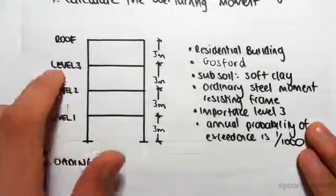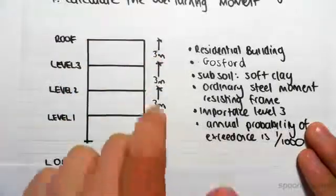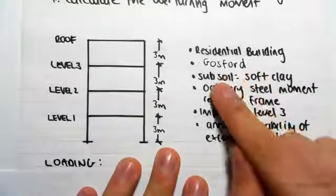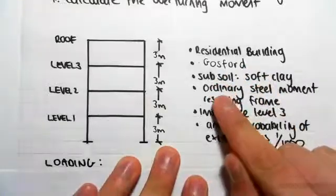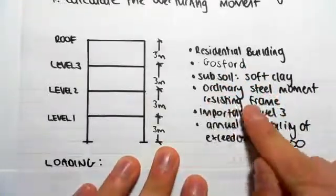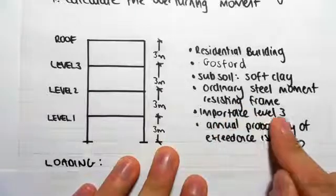Okay, so here's our structure. It is one, two, three, and there's a roof, three meters high each level. We're told that it's a residential building in Gosford, the subsoil is soft clay, it's an ordinary steel moment resisting frame, the importance level is three, and the annual probability of exceedance is one in one thousand.